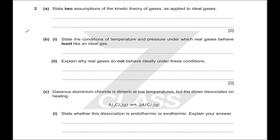For 'state two assumptions of the kinetic theory of gases', that's just a definition you need to learn. For 'conditions of temperature and pressure under which real gases behave least like an ideal gas': gases are least like ideal gases the closer the molecules are together. The ideal gas assumes molecules don't interact at all, so at high pressure they get closer together, and at low temperature they also get closer together — they start to interact more and behave less ideally.